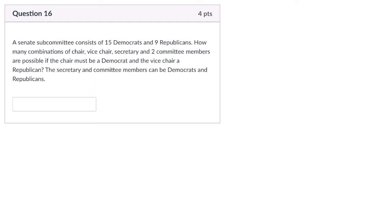Alright, so we're told here that a Senate subcommittee consists of 15 Democrats and 9 Republicans. How many combinations of chair, vice chair, secretary, and two committee members are possible, and we have some restrictions here, the chair must be a Democrat.